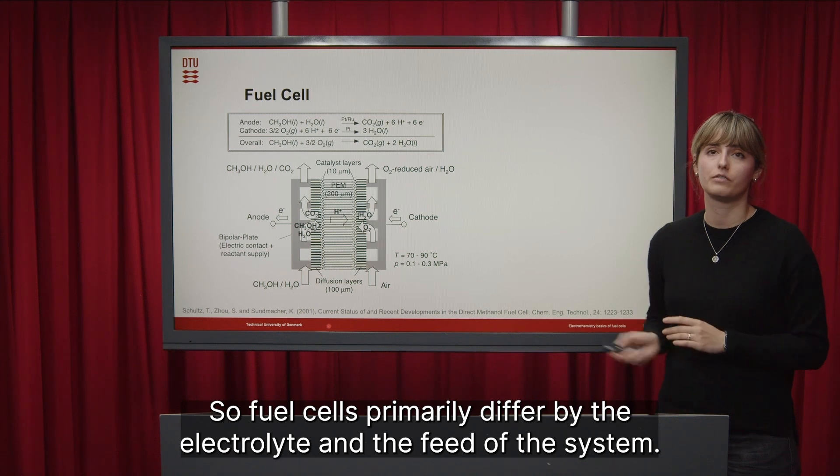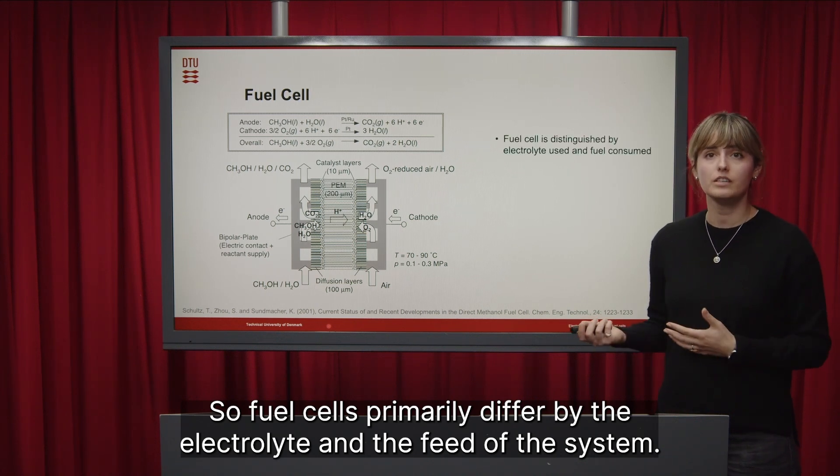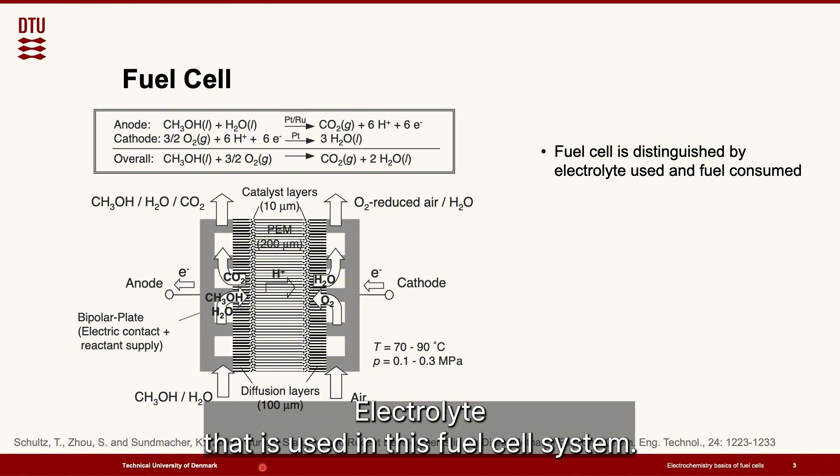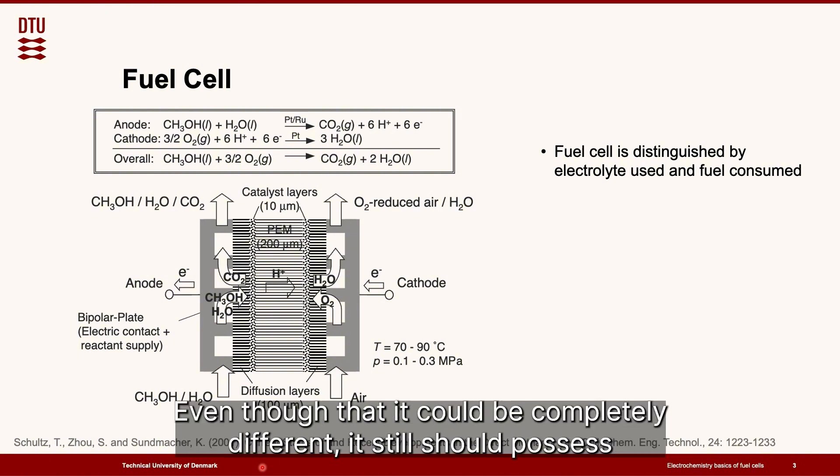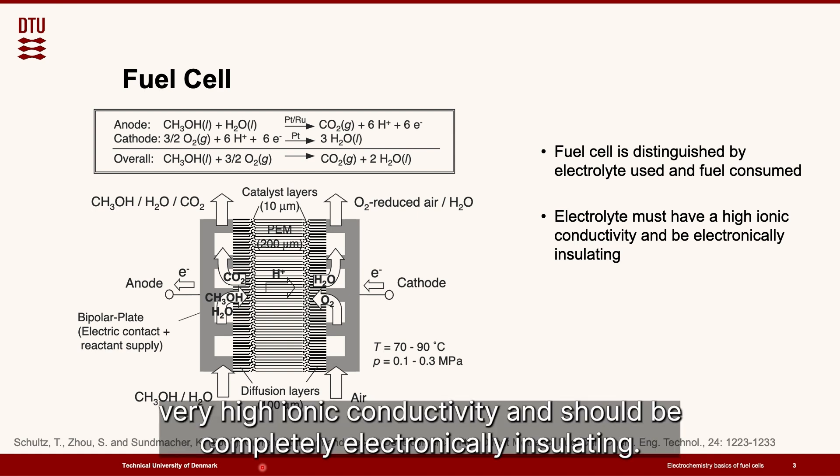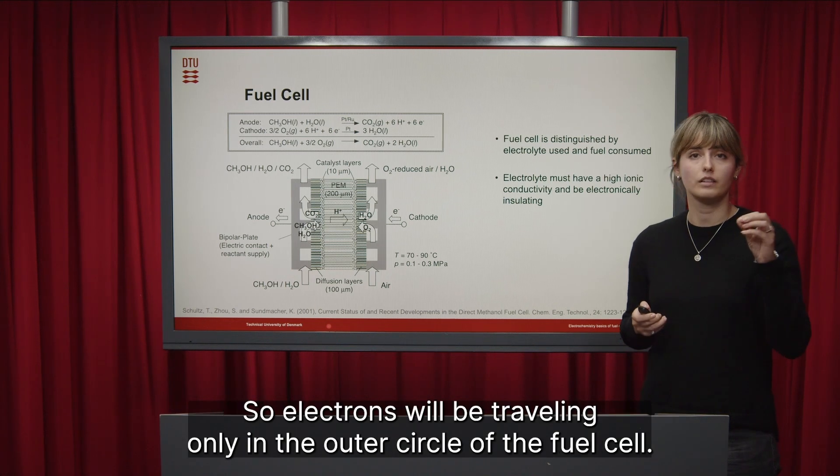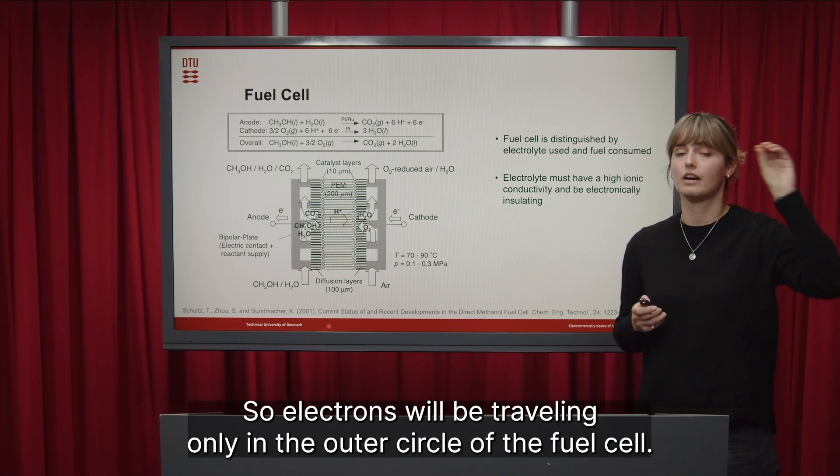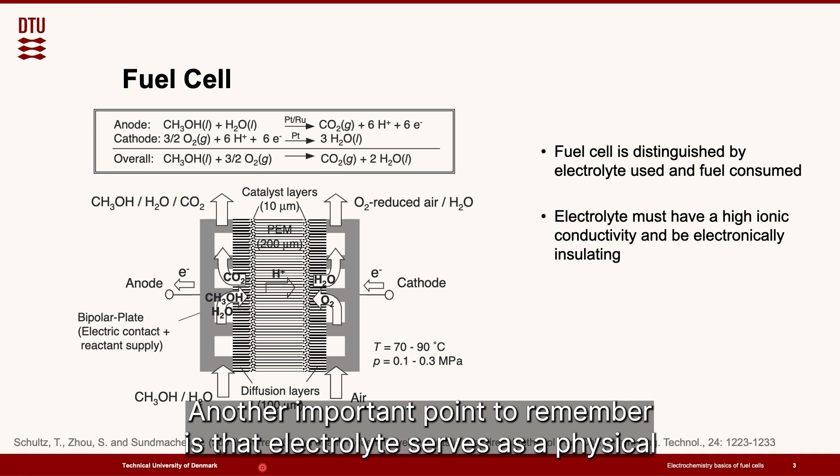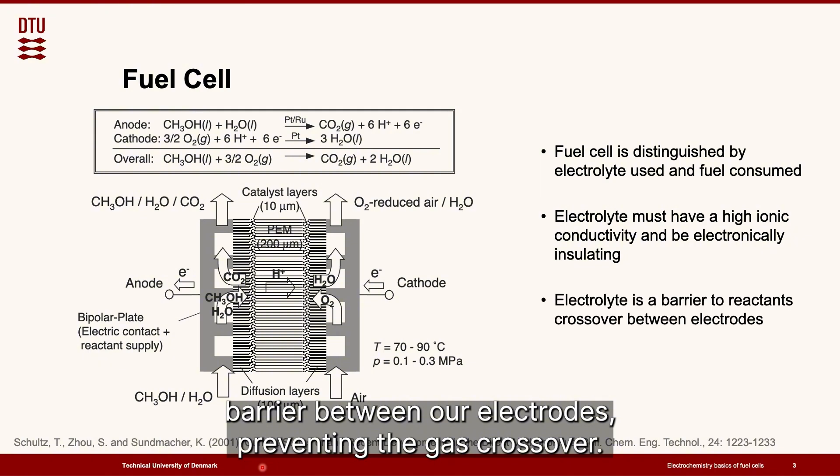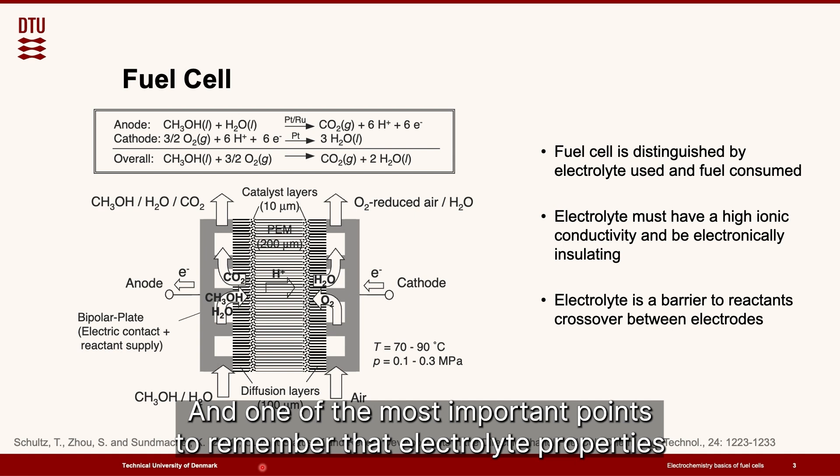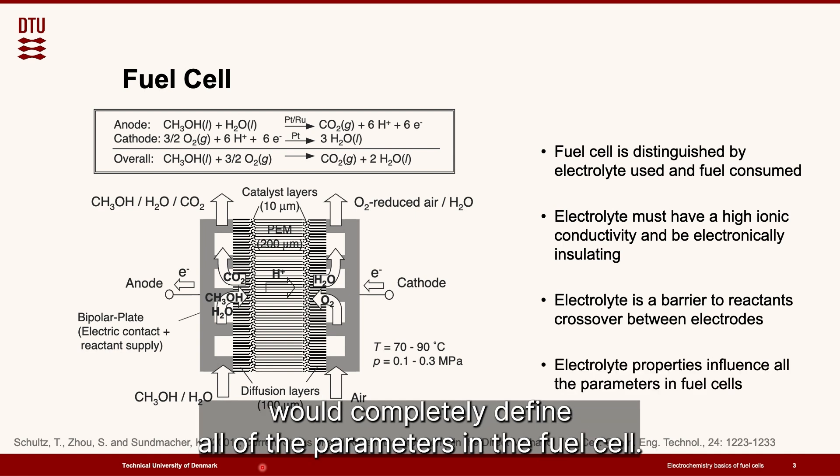So fuel cells primarily differ by the electrolyte and the feed of the system. Electrolyte that is used in this fuel cell system, even though it could be completely different, it still should possess very high ionic conductivity and should be completely electronically insulating. So electrons will be traveling only in the outer circle of the fuel cell. Another important point to remember is that electrolyte serves as a physical barrier between our electrodes preventing the gas crossover. And one of the most important points to remember is that electrolyte properties would completely define all of the parameters in the fuel cell.